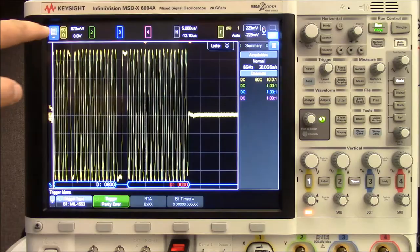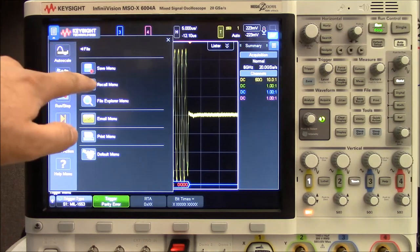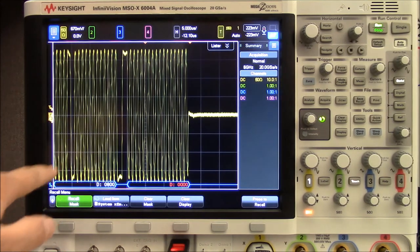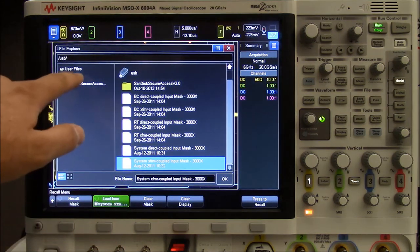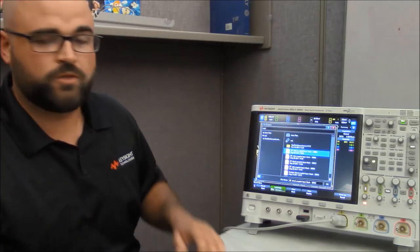Now loading one of these mask files is very simple. All we need to do is go into our start menu, tap file, and recall. From there we're going to select the file to recall type as mask, we're going to select press to go, and then you can see here in the root of my USB drive I have all six of the downloadable masks.